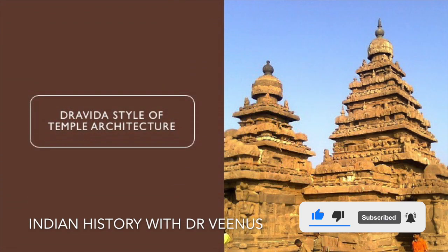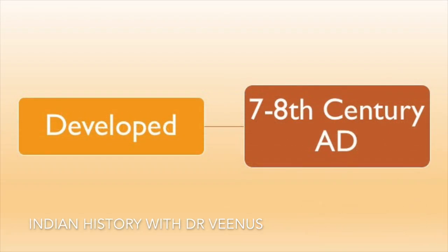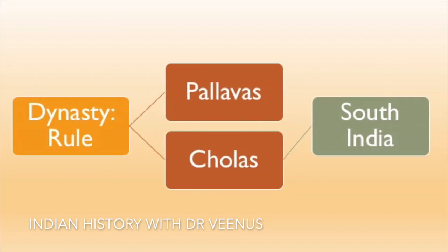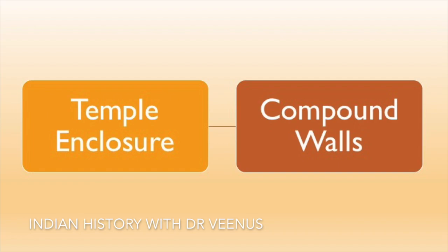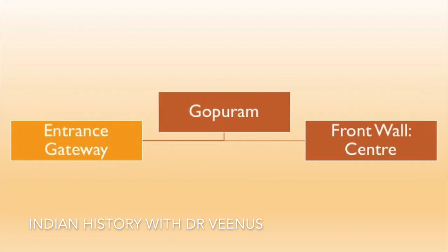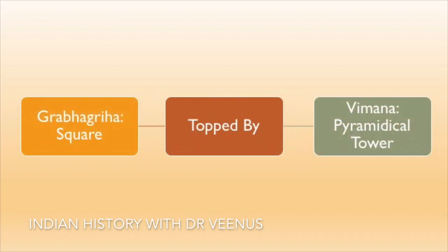The Dravid style of temple architecture predominantly developed in the 7th–8th century AD under the Pallavas and Cholas in South India. The main characteristics are: the temples are enclosed by a compound wall, the entrance gateway called the Gopuram is in the center of the front wall, and the Garbhagriha is square shaped and topped by a pyramidal tower called the Viman.